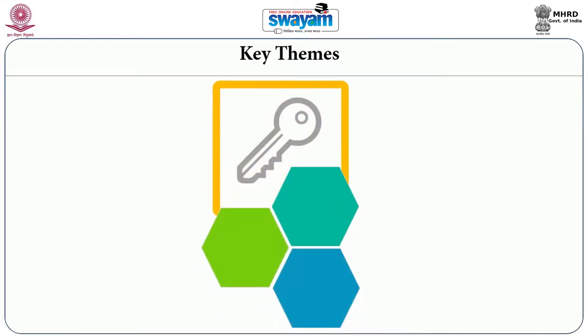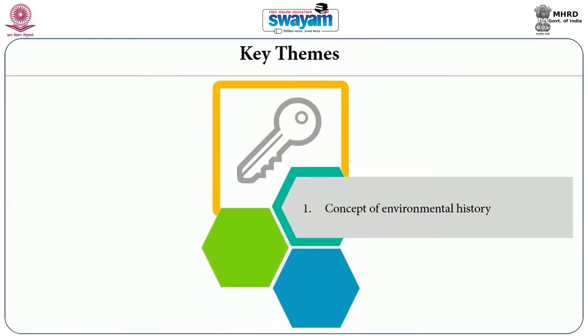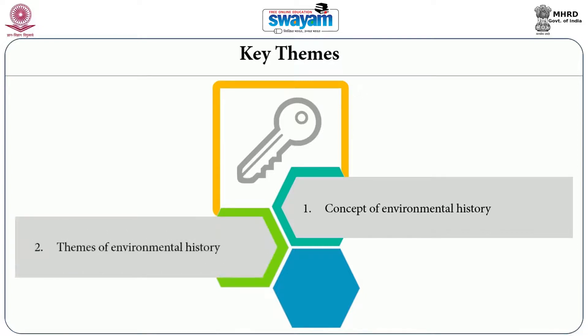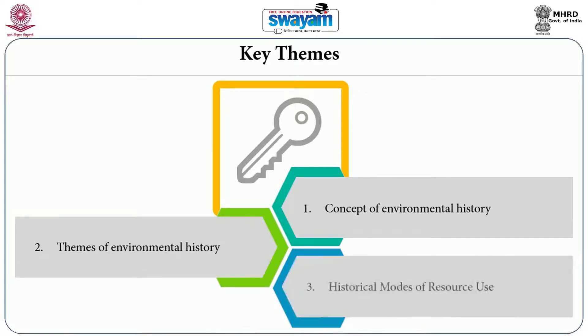In this class, we will basically discuss three topics. We will begin with a discussion on the concept of environmental history, where we will discuss what is environmental history and how it is different from ecological history, and we will try to make a conceptual categorization of environmental history. In the second part we will discuss major themes in environmental history, and finally we will discuss different modes of resource use.